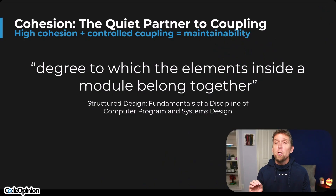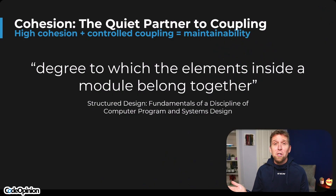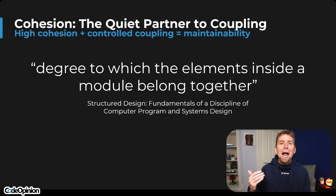So really, what you need to be thinking about in coupling is: how many things depend on something? What's the likelihood or the risk of that thing changing? And if it's high or low, and if it does change, how much pain are you going to feel? But what's usually lacking in any of these conversations — which are generally not even talking about coupling as the root — is you have to be talking about cohesion.